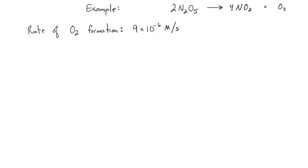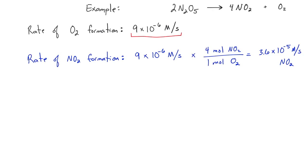If we have a measured rate—in this case, the rate of O2 formation experimentally measured to be 9 × 10⁻⁶ molar per second—we can use this to calculate the rate of formation of NO2. To do that, we multiply 9 × 10⁻⁶ molar per second times 4 moles NO2 divided by 1 mole O2, giving us 3.6 × 10⁻⁵ molar per second of NO2 formation.